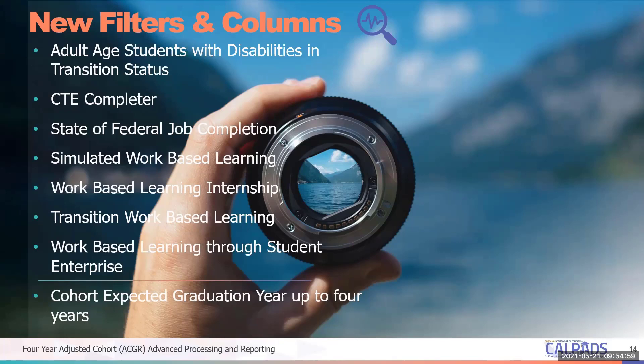The data for work-based learning is collected in the end-of-year one. There's a file called the WBLR file and there are specific codes for each of these. The core expected graduation year reports can now go up to four years, so you can run this year's and future years. All these terms and others are in the glossary in your workbook.